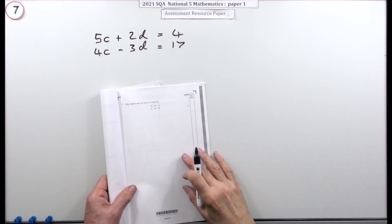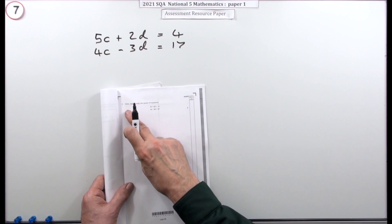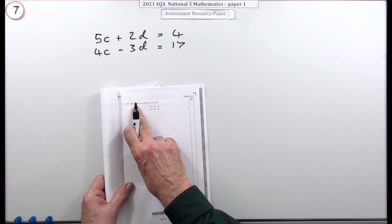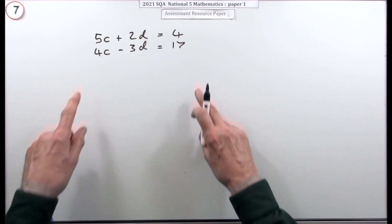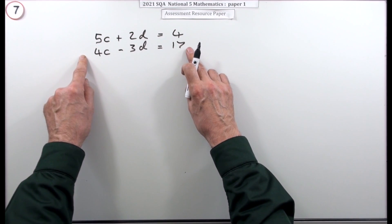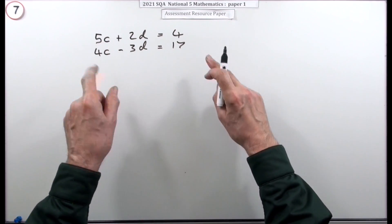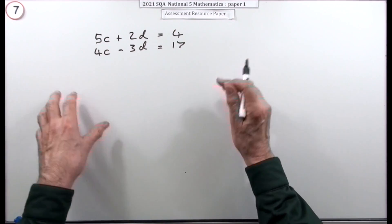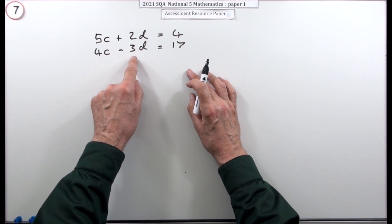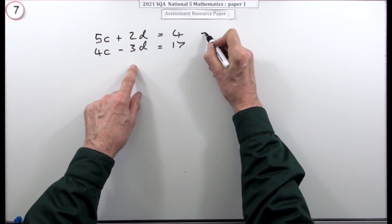Number seven then from paper one of the 2021 National Five resource paper, three marks simultaneous equations. Solve algebraically, so no guessing numbers just till you find ones that work. There's two ways you could do that - you could take one of these equations and rearrange it to read either c equals or d equals and substitute that into the other one, but that would be all fractions, that'd be too messy. The best thing to do is to multiply the equations up until you end up with the same coefficients of either c or d. So I'll give them names one and two.